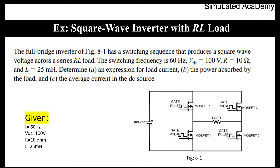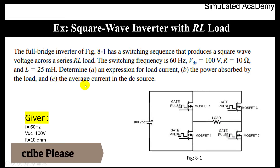This numerical is related to the square wave inverter with RL load. The statement of this problem is: the full bridge inverter has a switching sequence that produces a square wave voltage across a series RL load. The switching frequency is 60 Hz, the applied DC voltage is 100 V, the resistive load is 10 ohm, and the inductive load is 25 mH. We are asked to find the expression for the load current, the power absorbed by the load, and the average current in the DC source.